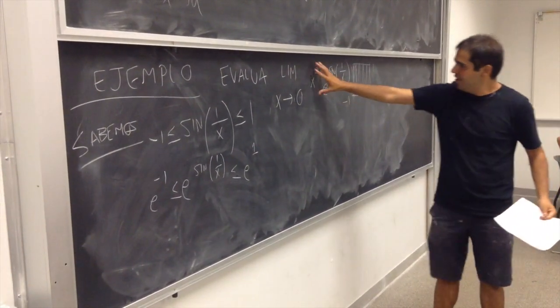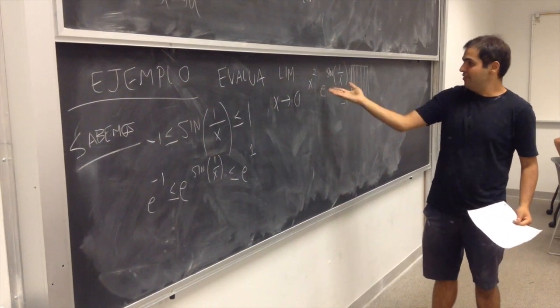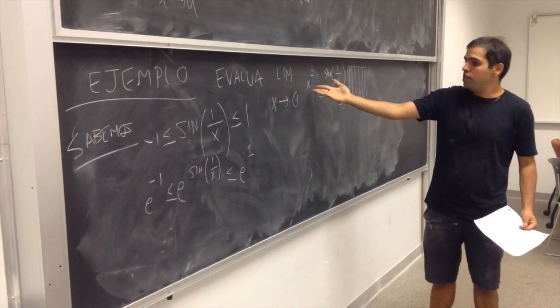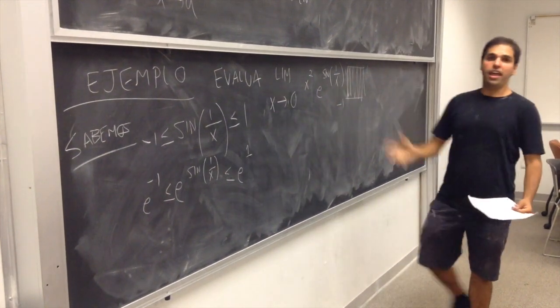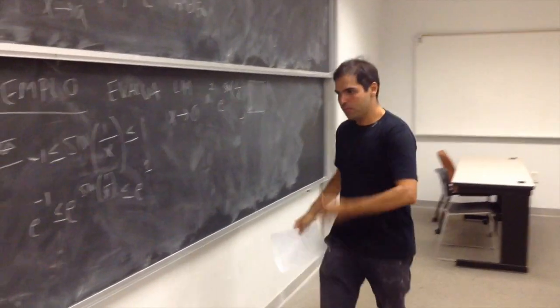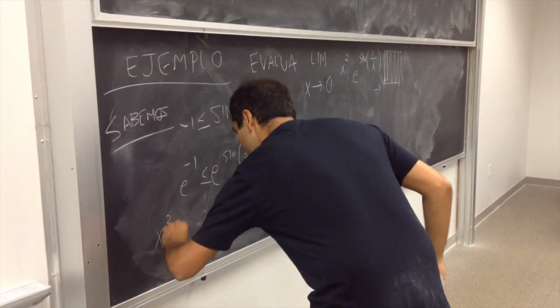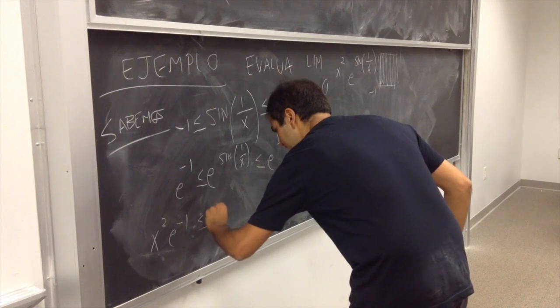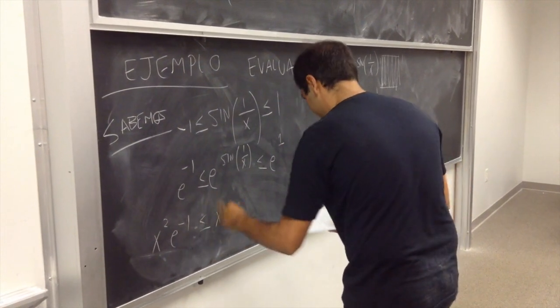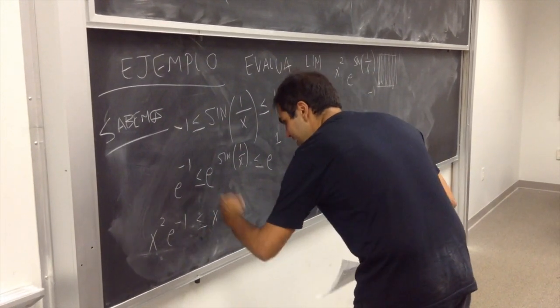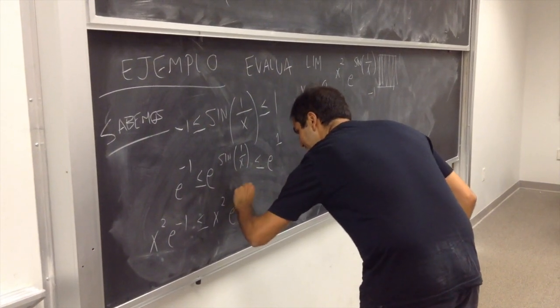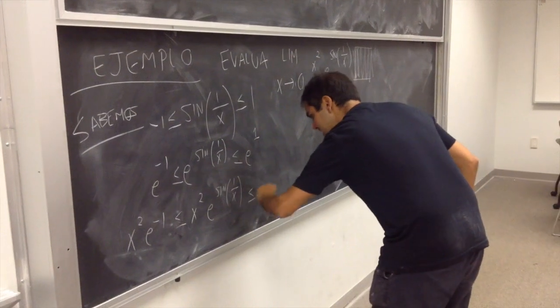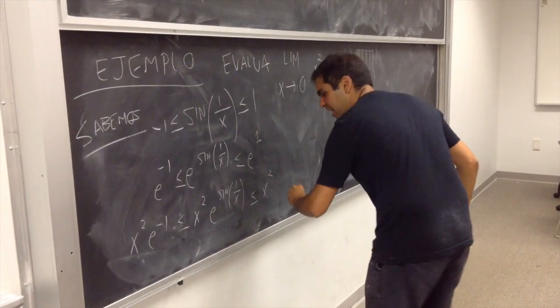¿Y cómo podemos obtener esta función? Solo tenemos que multiplicar esto por x cuadrado. Por eso sabemos que x cuadrado e a la menos 1 es,